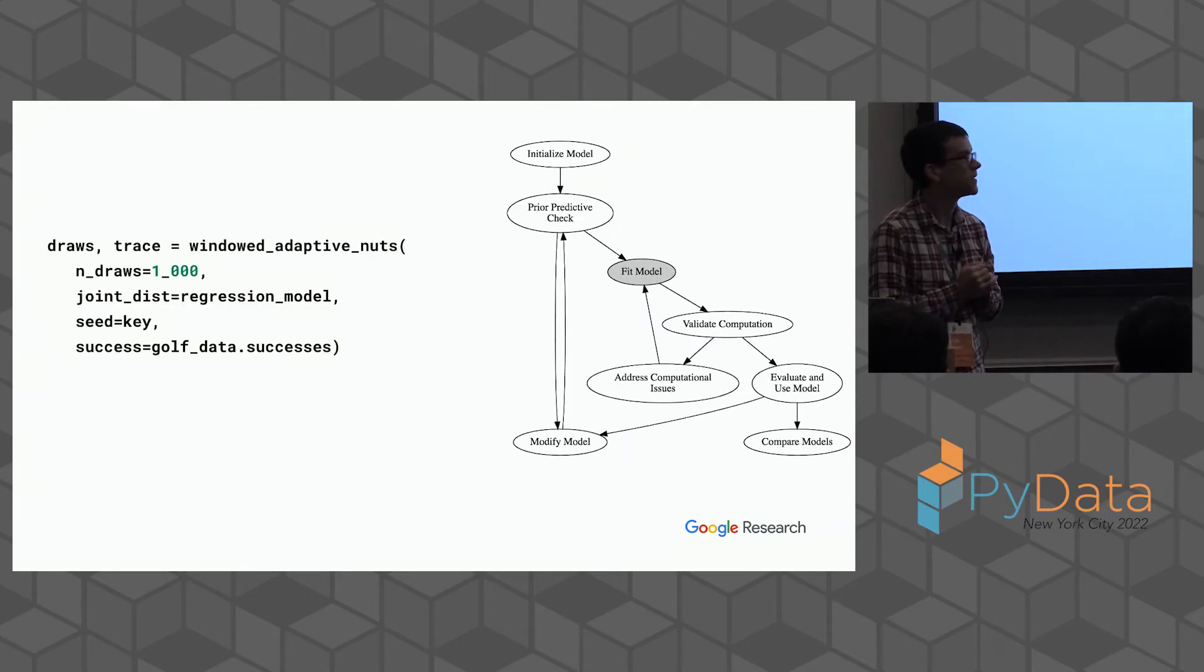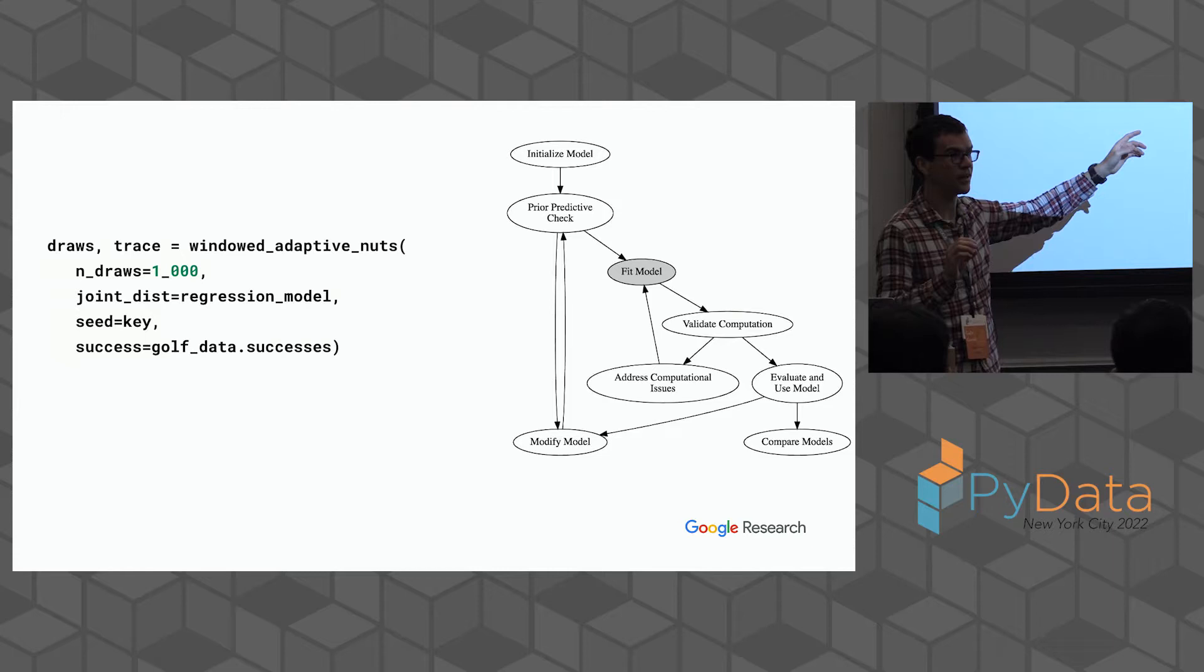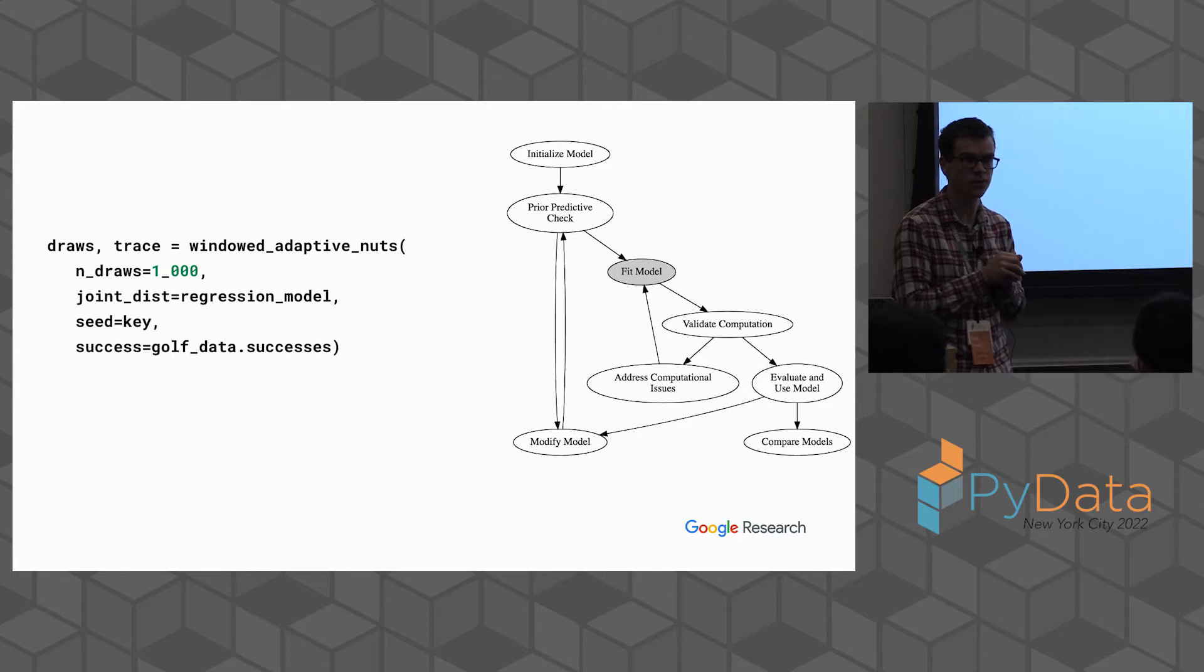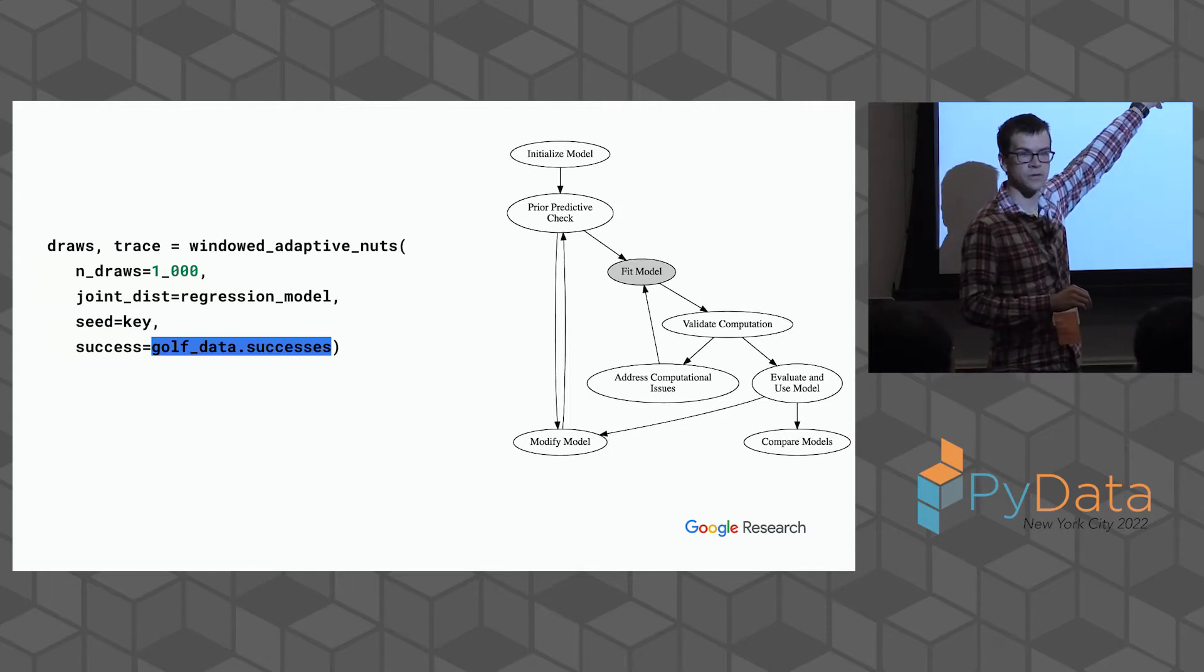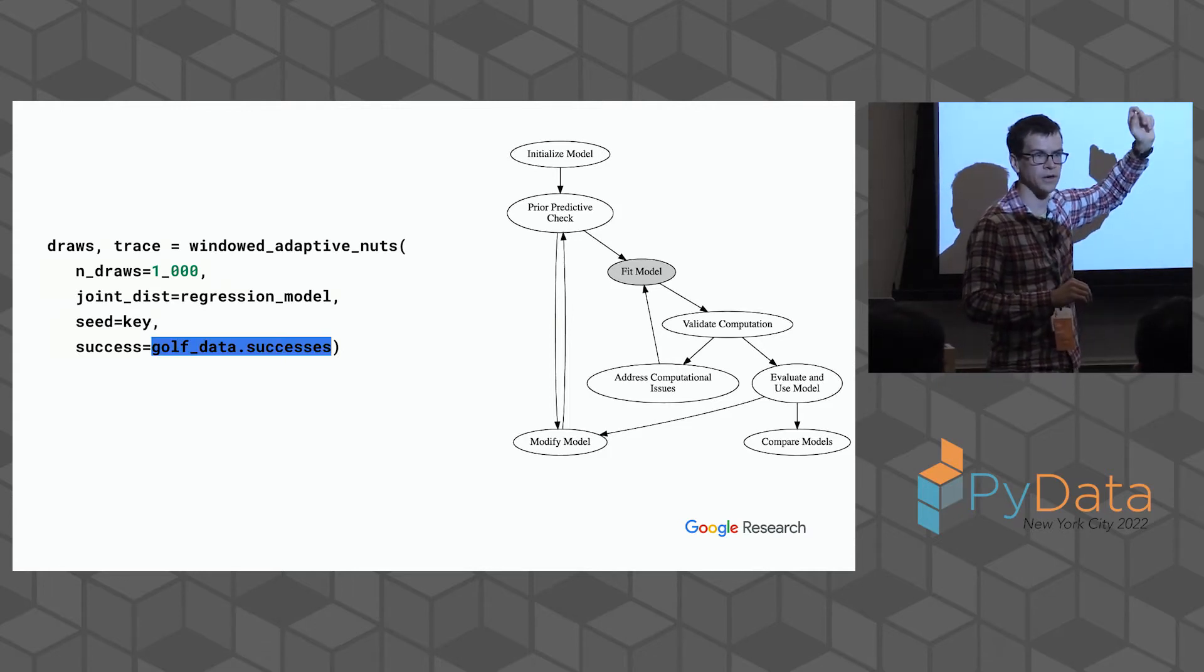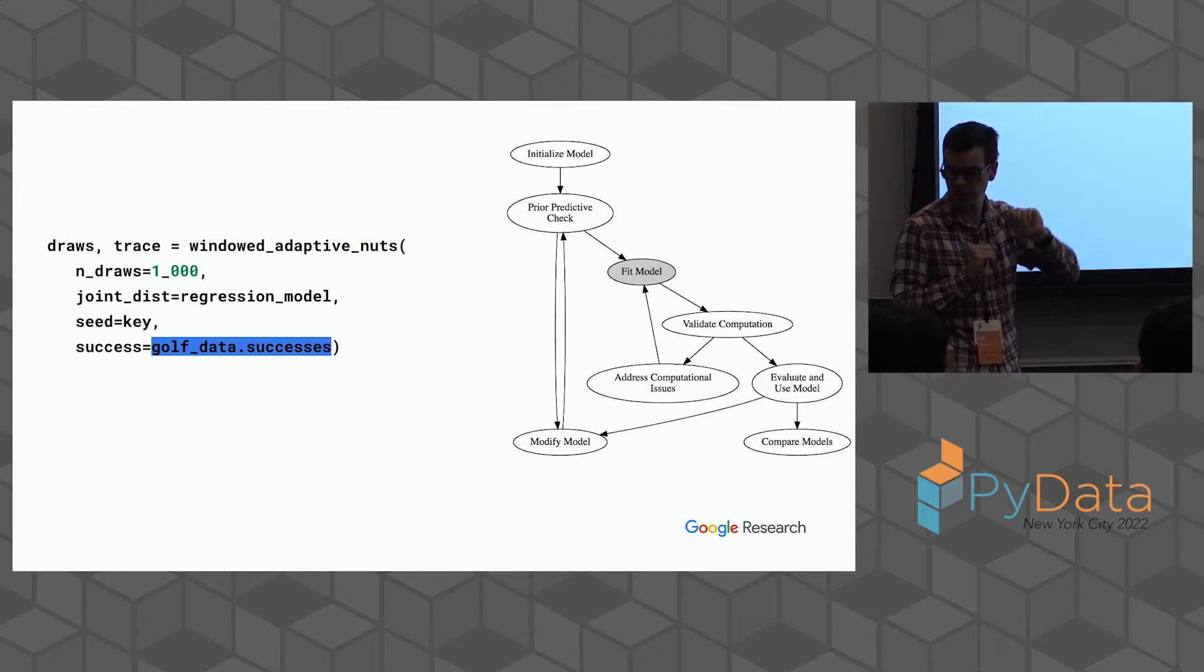This is our prior predictive check. We can move around to fitting the model. If you see me in the hallway afterwards, this is where my happy place is. I'm not going to focus on what's actually going on here today. This is why we are using JAX or some sort of auto differentiation library that knows how to compute derivatives, because you can do a much better job of fitting a model once you have derivatives. TFP ships with a function called windowed adaptive NUTS that runs a wonderful gradient-based sampler.